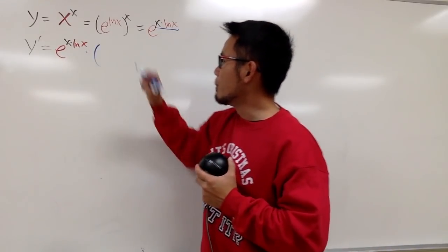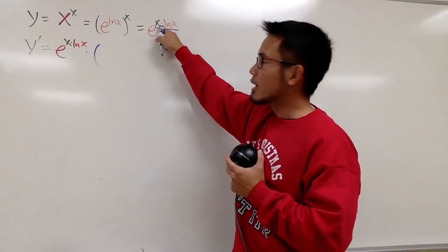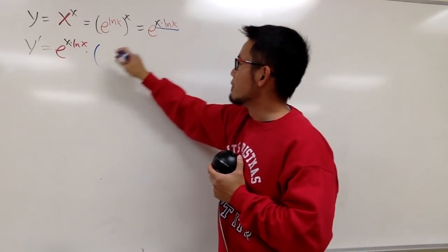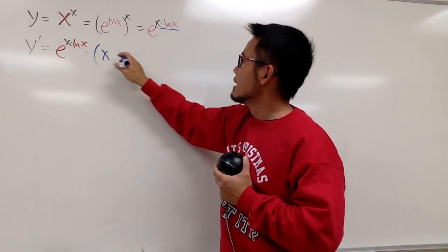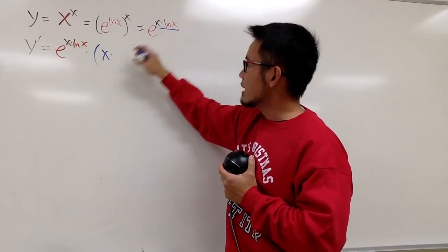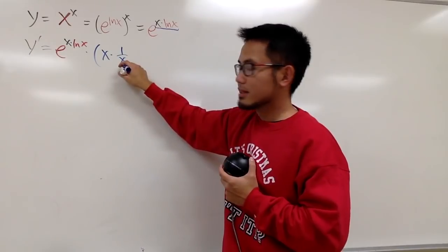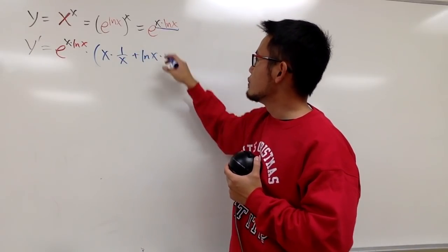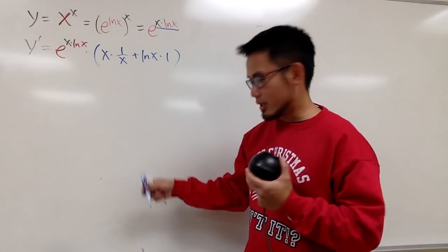So, let's go ahead and open the parentheses. And this is the product of two functions. So, we have to use the product rule. And the product rule I want to use is, I will keep the first function, which is x. And differentiate the second, which is going to be 1 over x. And then, we add the second function, which is ln x. And then, we differentiate the first, which is 1. So, that's pretty much it.